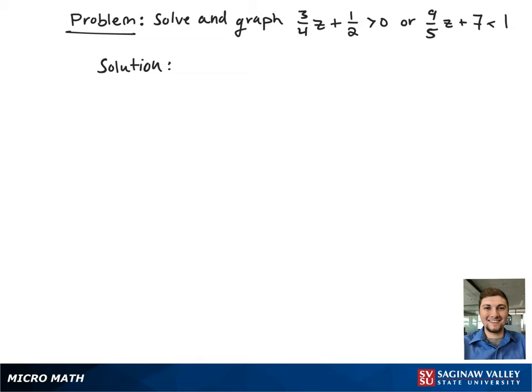Here we have the compound inequality 3/4 z plus 1/2 is greater than 0 or 9/5 z plus 7 is less than 1.